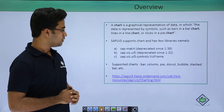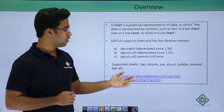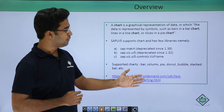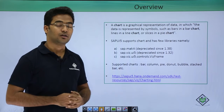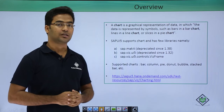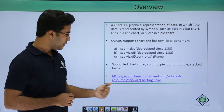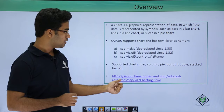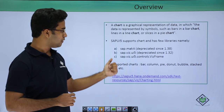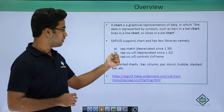Some of the supported chart types include bar chart, column chart, pie chart, donut, bubble, stacked bar, and many more. There are many supported charts in SAPUI5. Let us look at an example using these, where we will mention some of the Viz chart types.